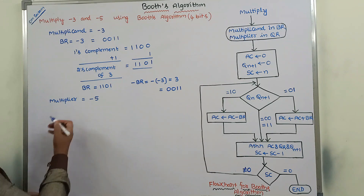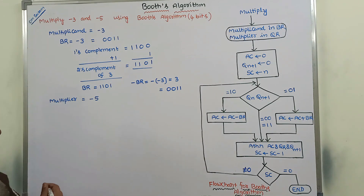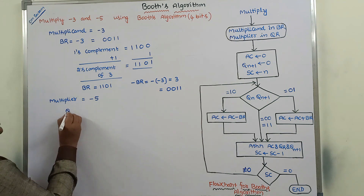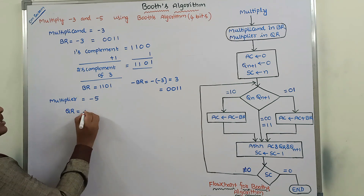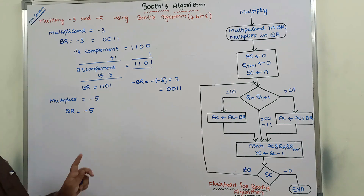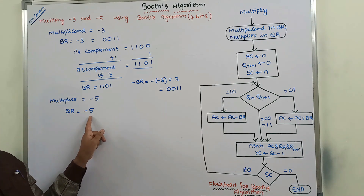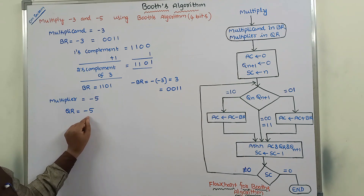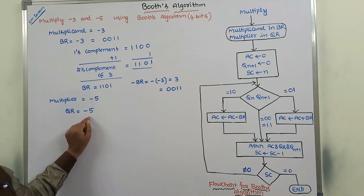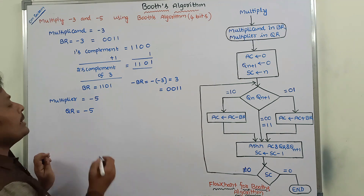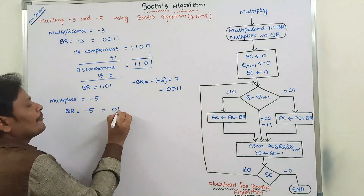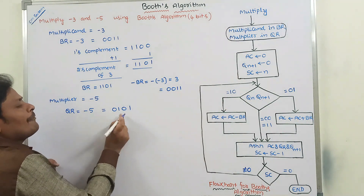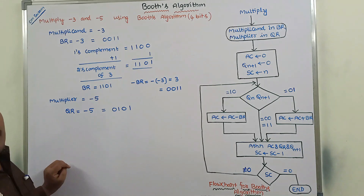Now we can go to the multiplier. The multiplier contains the value minus 5, stored in the QR register. QR contains minus 5. Minus 5 is a negative number, so to represent this negative number we have to use 2's complement. To find the 2's complement, first we write the binary form of 5 in terms of 4 bits: 0, 1, 0, 1.